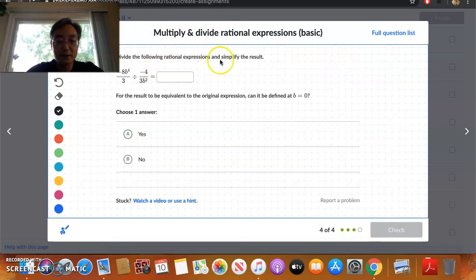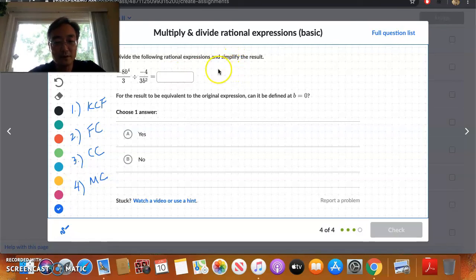And then finally on this problem set, it says divide the following expressions and simplify the result. So again, here, we know we have to apply keep change flip because it's a division. So keep change flip. And then we have to factor completely. And then we have to cross cancel. And then finally multiply across. So keep change flip. Here we go. Negative 8b to the 4th over 3 times 3b squared over negative 4. So check. Change flip.